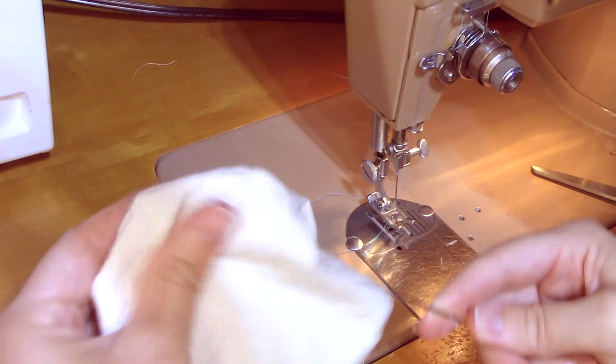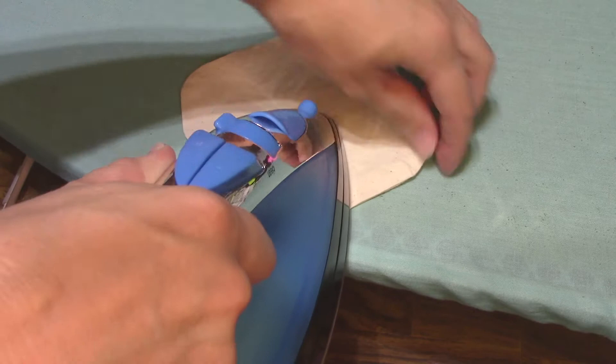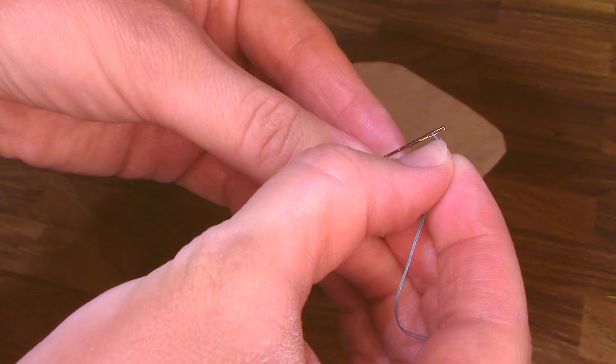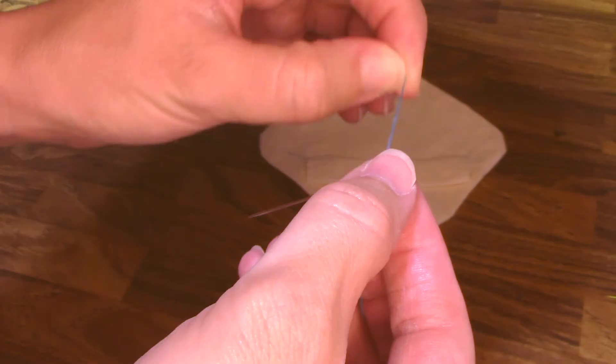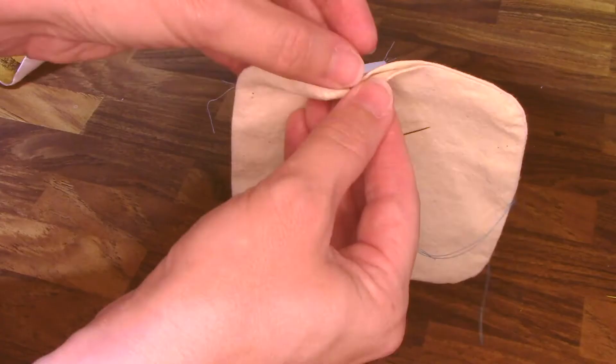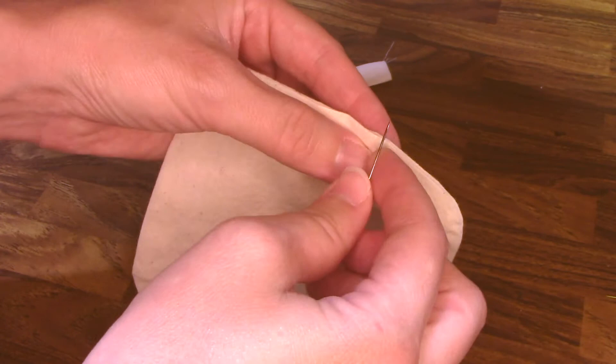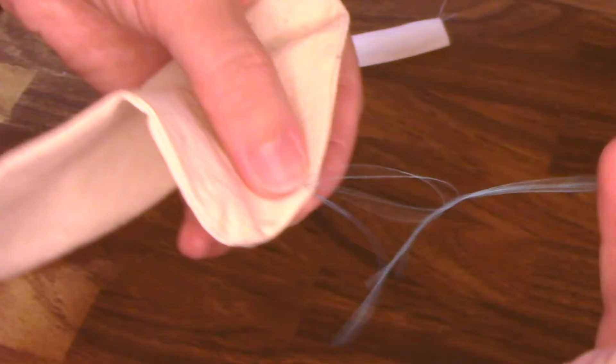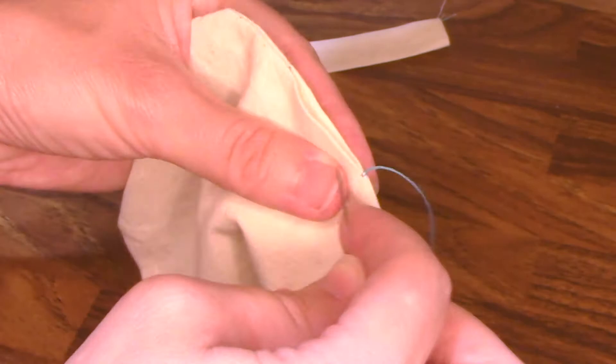Once you've turned your pieces right sides out, press the edges. Using a threaded hand needle, anchor your thread to the edge of the opening and use a whip stitch or ladder stitch to close the opening. I'm using a different colored thread for this example, but you can use a thread that matches your fabric so it will be less visible when you're finished.